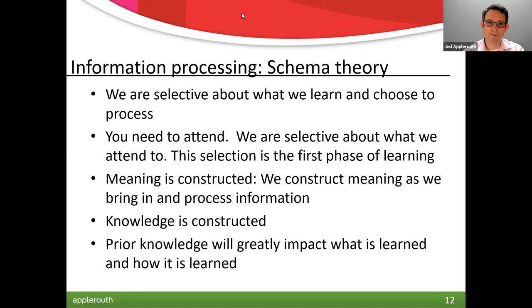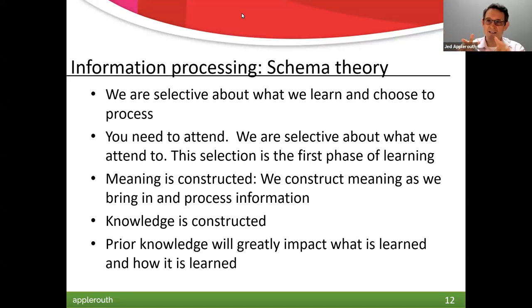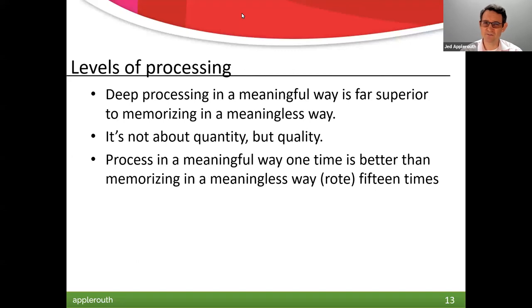Schema theory is about how previous knowledge affects how we construct new meaning. The schema we already have — previous information, other ideas — really affects how we hear, see, and listen. When you see something novel with nothing to anchor it to, it doesn't encode as well. But if you have other schema in there, it helps you glob on to what you already know. Previous information in your brain acts like a scaffold for what's new and coming in.